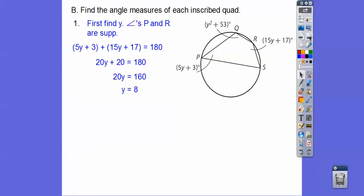This says find the angle measures. So we can find the angle measures by plugging in y equals 8 here, and here. Now once we find this one, we know this one because it's the supplement because they add up to 180. And once we plug in 8 right here, 8 squared plus 53, we find the supplement, that'll give us S because the opposite angles are supplementary.